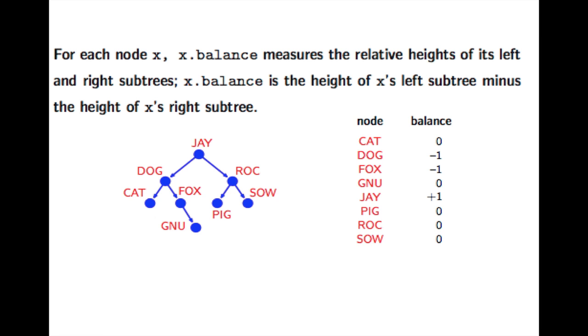So to implement this what we do is for each node we have a variable that measures the difference between the heights of the left and right subtrees. So let's see what this is here.